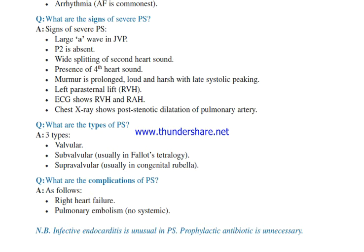What are the signs of severe pulmonary stenosis? A large A wave in JVP; P2 is absent; wide splitting of the second heart sound; presence of a fourth heart sound; murmur is prolonged, loud and harsh with late systolic peaking; and left parasternal lift. ECG shows right ventricular hypertrophy and right atrial hypertrophy.